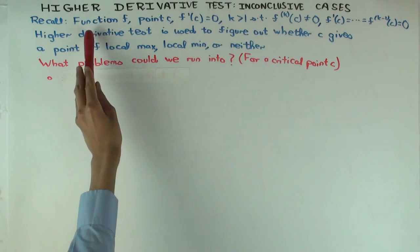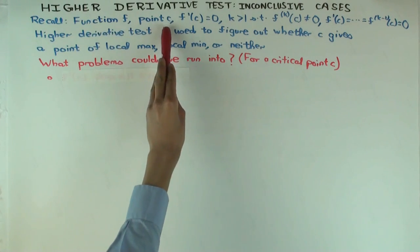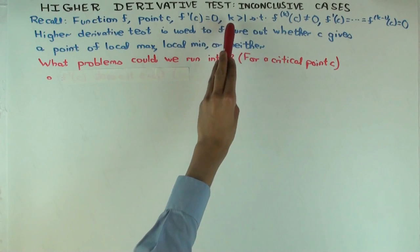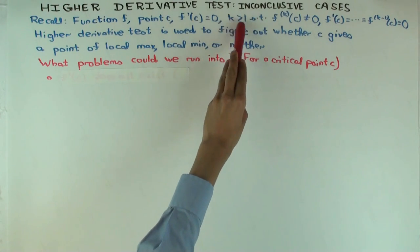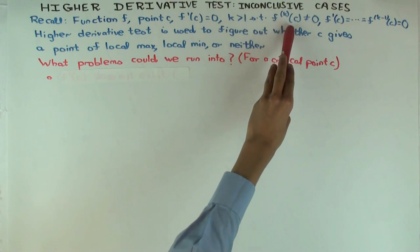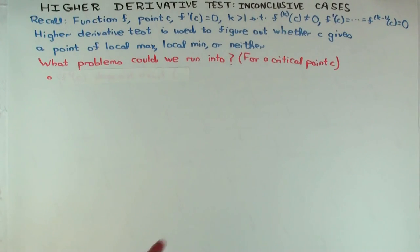Just a quick recall of the higher derivative test. You have a function, you have a point in the domain, the first derivative is 0, and there's some positive number k greater than 1 such that the kth derivative is non-zero and all previous derivatives are 0. The higher derivative test basically helps you figure out, under these conditions, whether you have a local max or local min or neither.